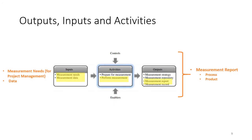The inputs, activities, and outputs are shown in a diagram. On the input side we need the measurement needs — what the project management is trying to capture — and then the data for those needs. The activity is to perform the measurement, and the result is the measurement report. It's important to distinguish between measurements for process and measurements for product.